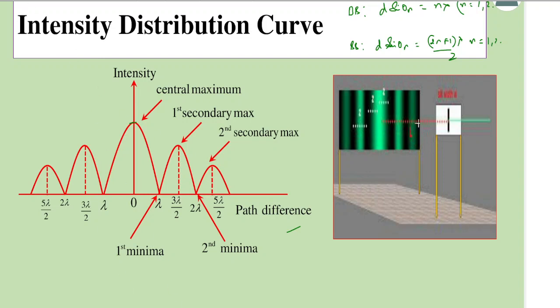Now let us recall that the intensity at any point is I = I₀ sin²α / α², where α = π/λ × d sin θ. Again, we are not proving this; it is taken to be true.